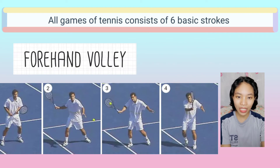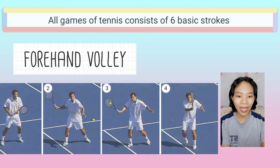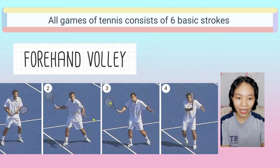Forehand Volley. The forehand volley is one of two types of volley. It is generally played closer to the net than other strokes. Like the forehand ground stroke, a forehand volley is hit with the racket in your dominant hand, palm facing away from your body. Forehand volleys are hit with your dominant hand to the right side of your body if you are right-handed, and to the left side if you are left-handed.